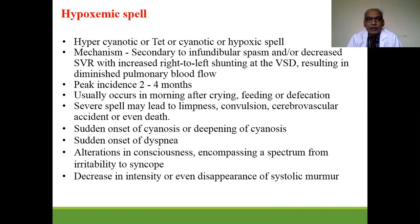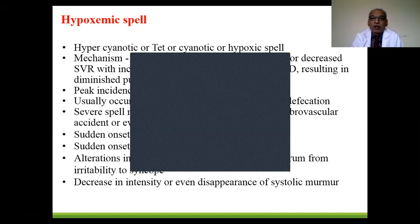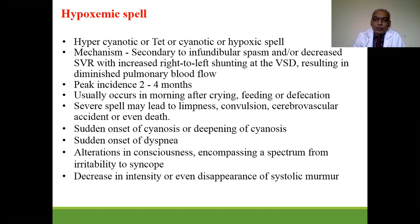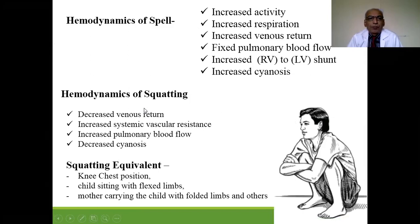Sometimes spells cause death. There is sudden onset of cyanosis and dyspnea, sometimes with loss of consciousness, and decreased intensity of the systolic murmur. Hemodynamically: increased activity, increased respiration, increased venous return, fixed pulmonary blood flow, increased right-to-left ventricular shunt, and increased cyanosis.